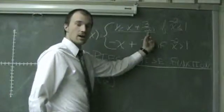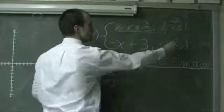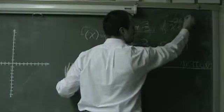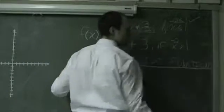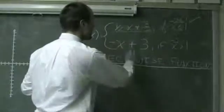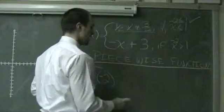of x to find my function value. So because negative 2 is less than or equal to 1 and that checks, it's a true statement, we're going to plug in negative 2 for my 1/2x + 3/2.